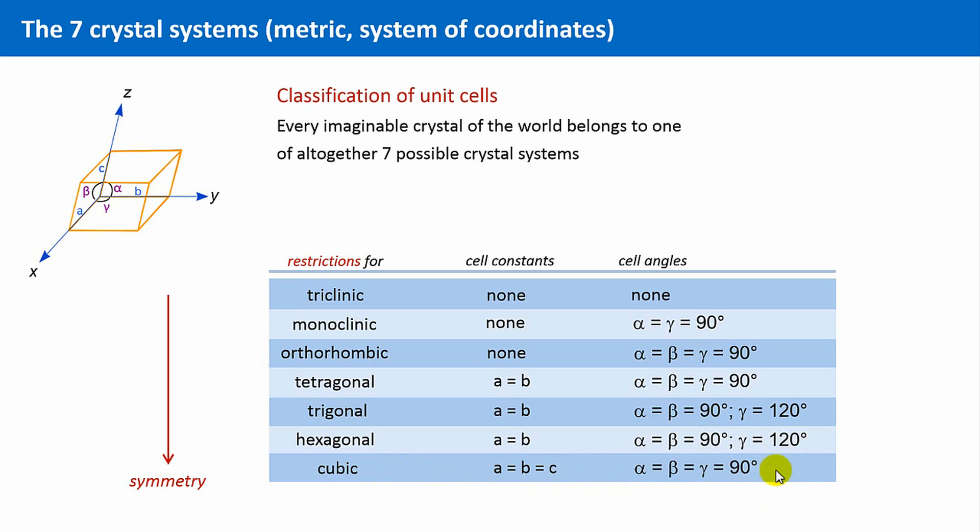You might think, there are seven systems, but only six different entries, because the values of the trigonal and hexagonal system are absolutely identical. That's right! And that is also the reason why sometimes it is said that there are six, and not seven, crystal families. The trigonal and hexagonal system belong to the same, the hexagonal crystal family.